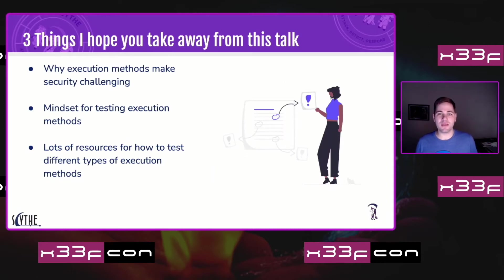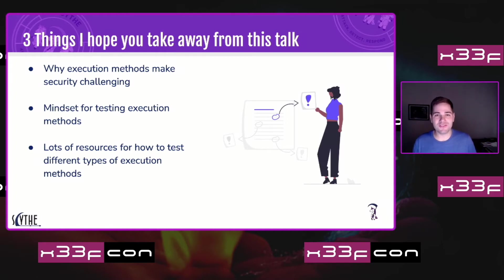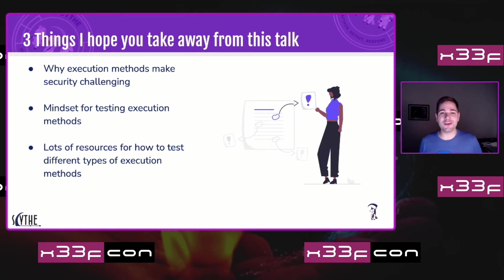Three big things I hope you'll take away from this talk: first, why execution methods are a hard problem and why they make security challenging, since they're the ground floor of everything else we build on. Second, the mindset for how you can do depth of testing with different execution methods — focusing on drilling down on a few specific ones rather than working broadly across the MITRE ATT&CK matrix. And third, a ton of resources so you have options whether you're in an enterprise, a student, or working in your own lab.